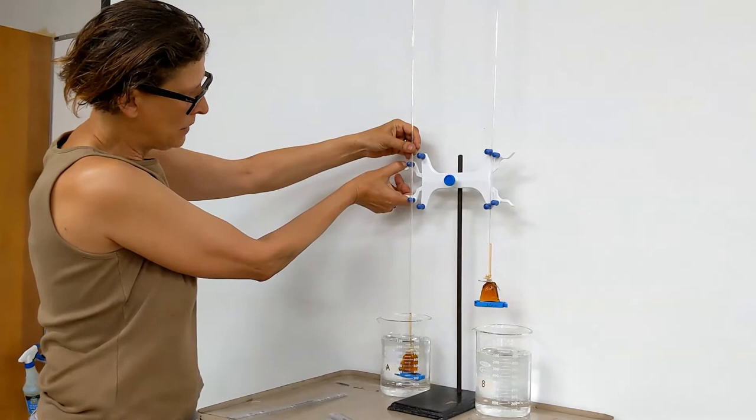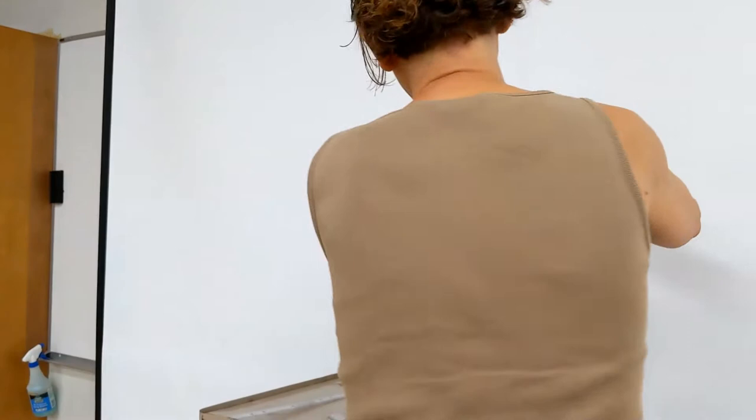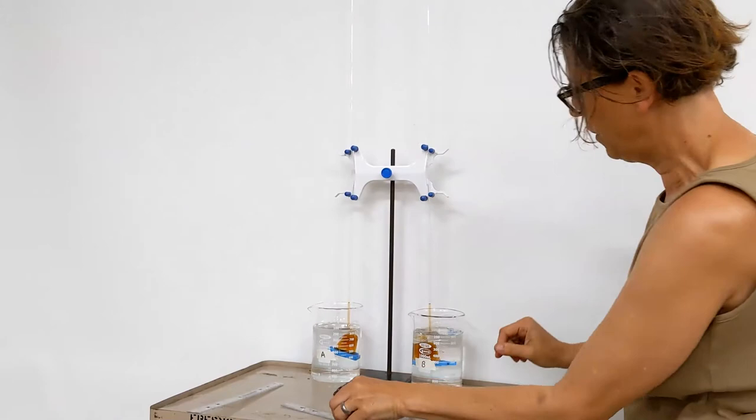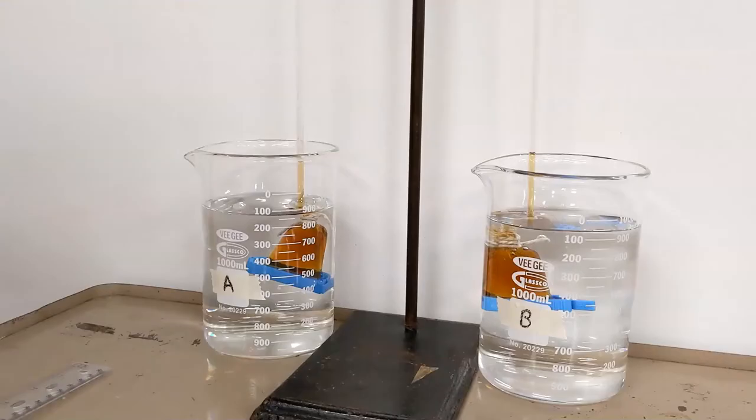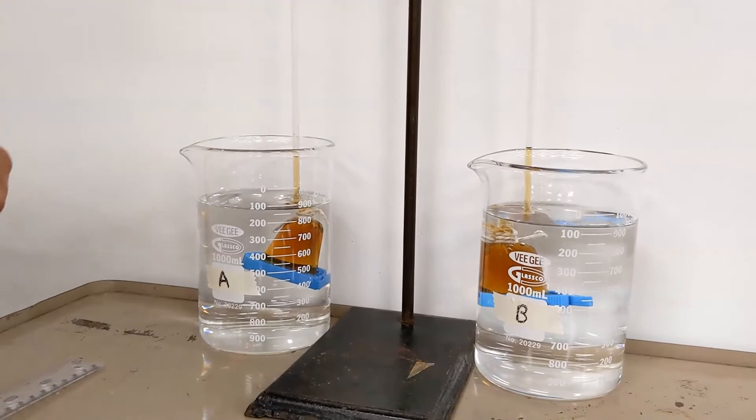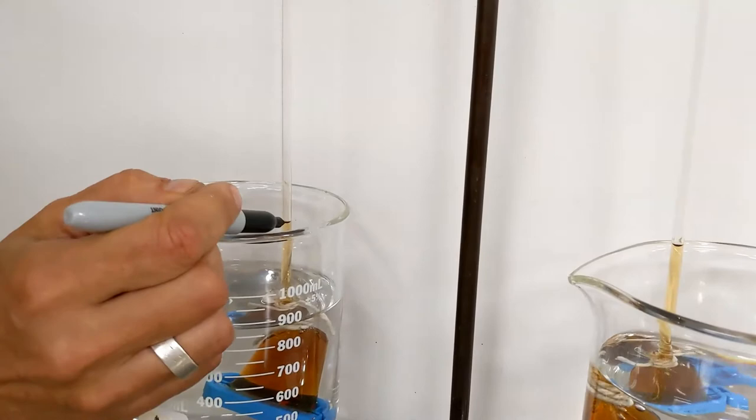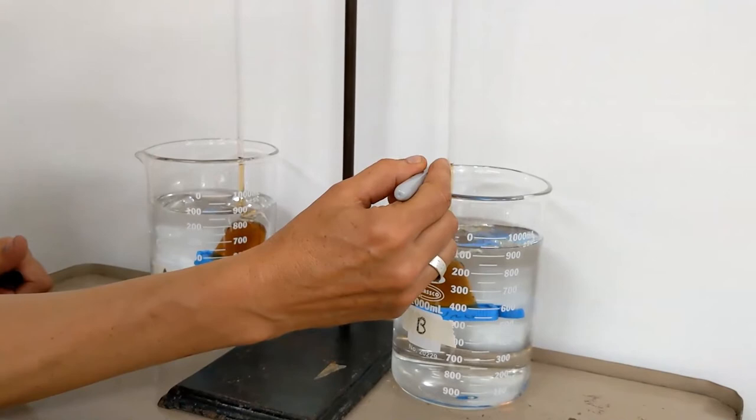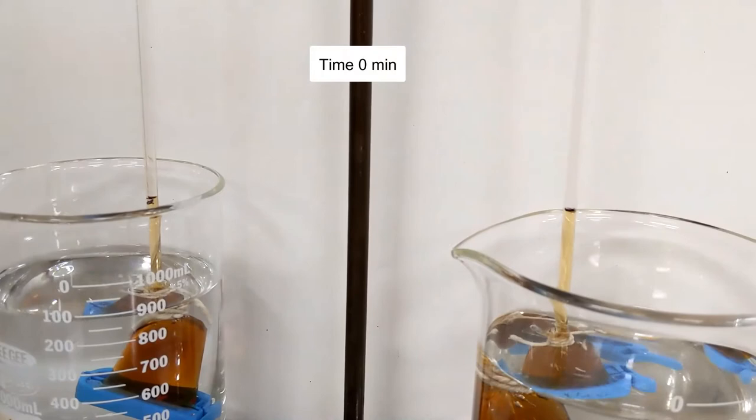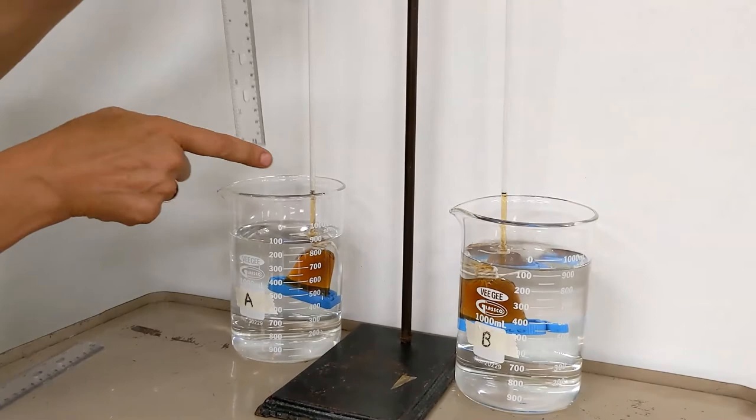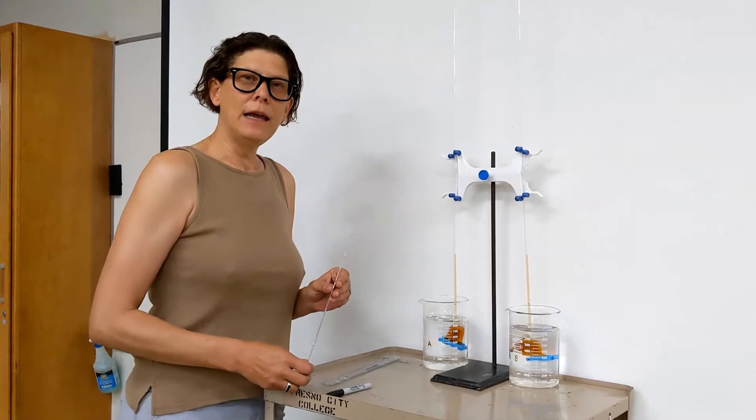Let's drop our dialysis tubings into beaker A and beaker B. We want to note the original starting point. We will now initial our beginning point. Add the meniscus, and then over time we'll be using a ruler metric system to measure how far each has traveled.